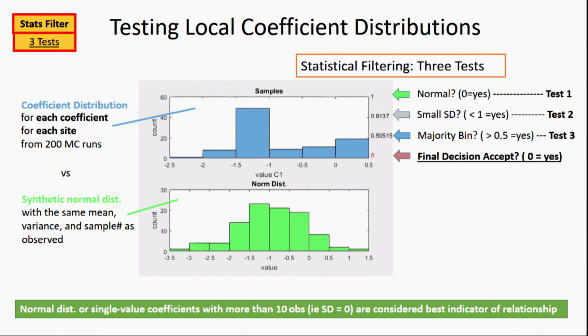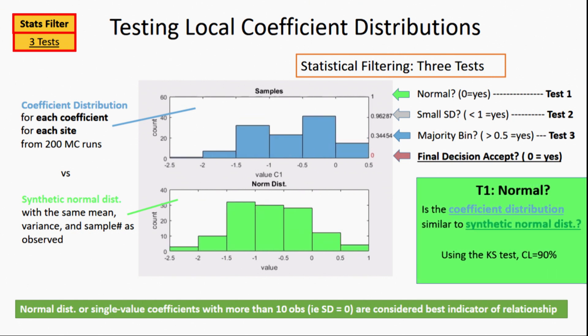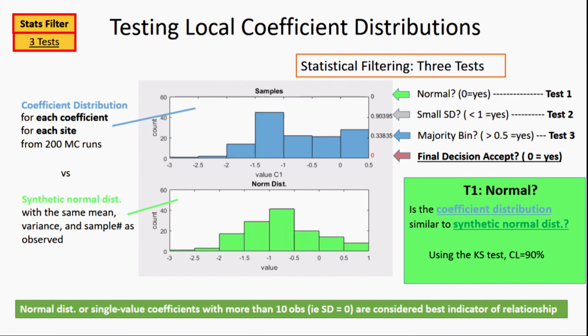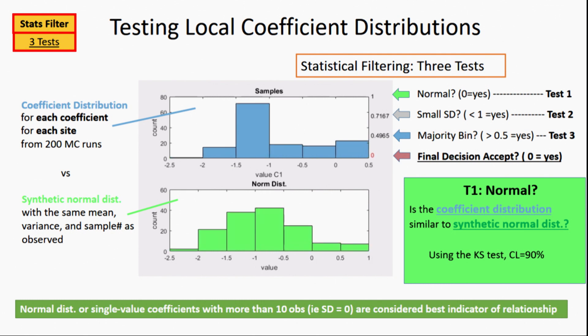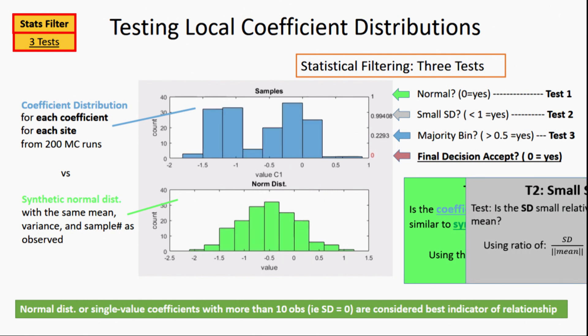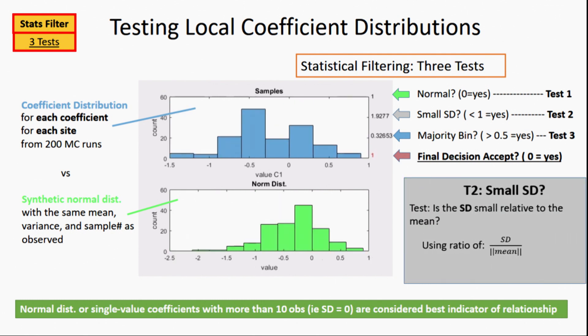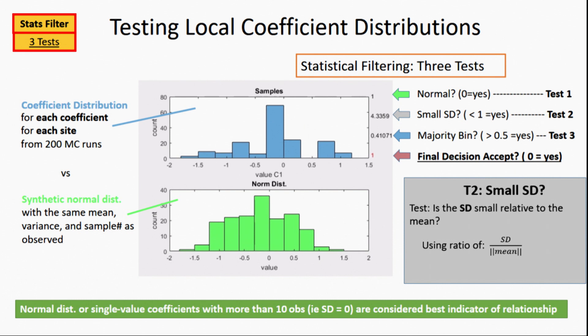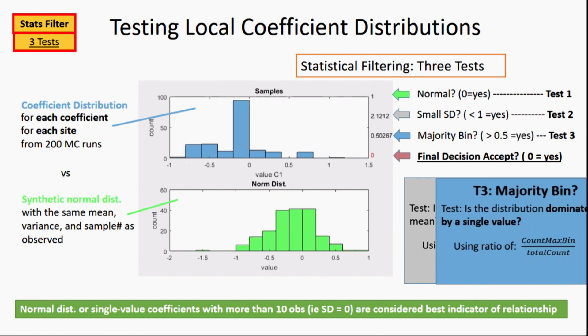These are what our tests look like. What you see here is our first test is for normality. If these coefficients were relatively well distributed, they might be normal here. We used the KS test. The bottom is a synthetic normal distribution we're testing against. We also wanted the data to have a small standard deviation at each location. That would mean that it was relatively constant, like we showed in our predictions.